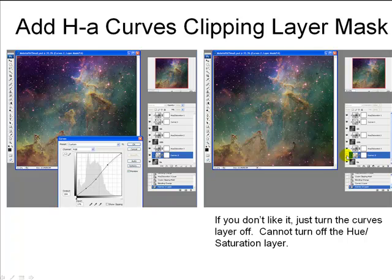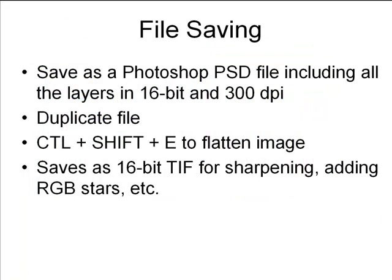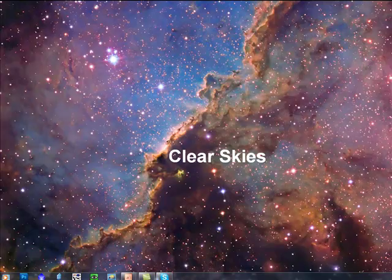There's tremendous flexibility here. Once you've done all the adjustments and you're happy with the result, save this as a Photoshop PSD file with all layers in 16-bit and at least 300 dpi, so you can go back and change the color if needed. Then duplicate that file, hit Ctrl+Shift+E to flatten the image, and save it as a 16-bit TIFF file for later use — for example, sharpening the data or adding another layer to change the narrowband stars to RGB stars.